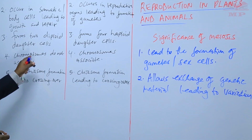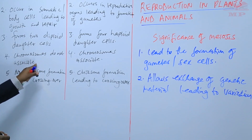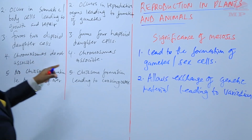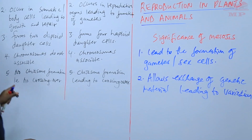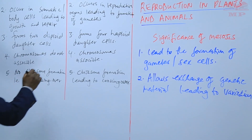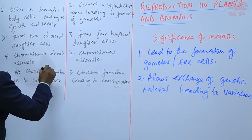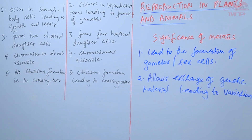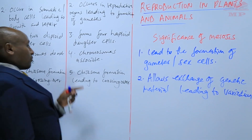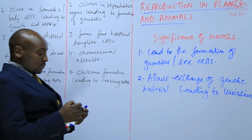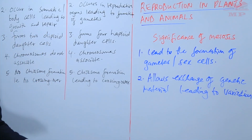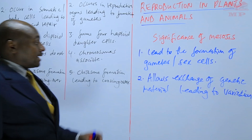Number four: chromosomes do not associate in mitosis, but in meiosis they associate. In mitosis, there is no chiasma formation, therefore no crossing over, but in meiosis, there is chiasma formation, leading to crossing over. That marks the end of today's lesson.